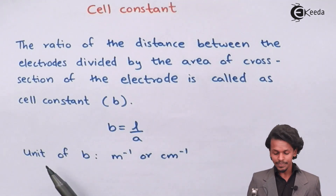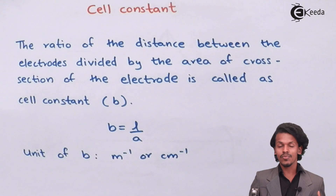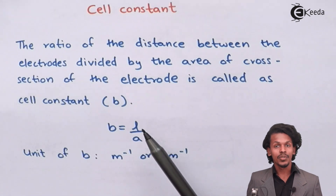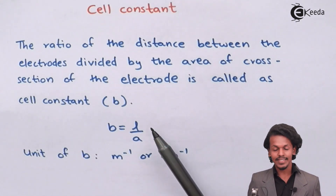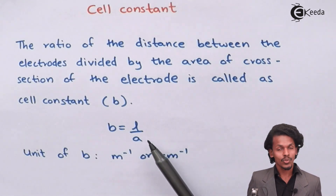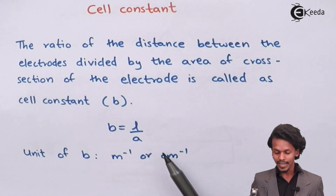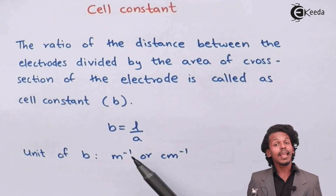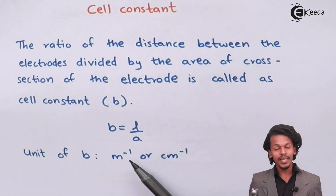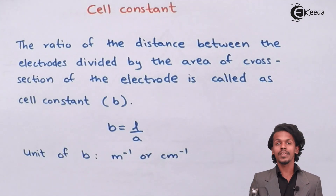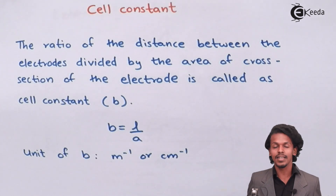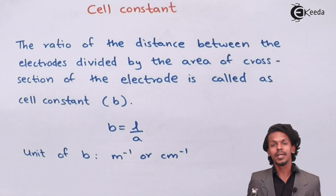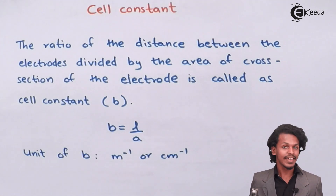What would be the unit of B, the cell constant? In CGS units, length is in centimetres and area is in centimetres squared, so centimetre divided by centimetre squared gives centimetre inverse. In SI units it would be metre inverse, but since the apparatus is so small, we usually measure the cell constant in centimetre inverse.